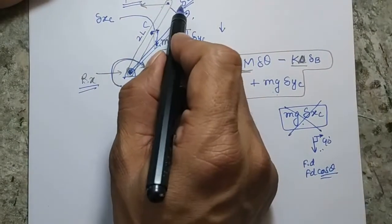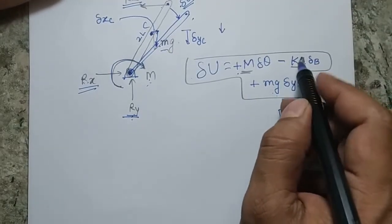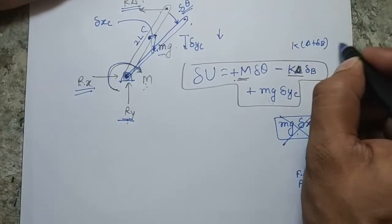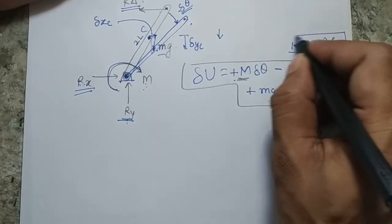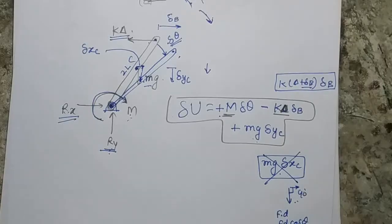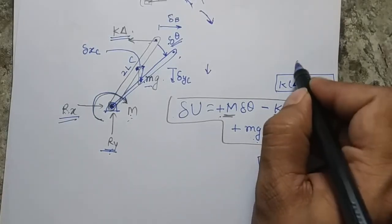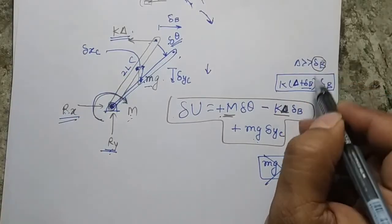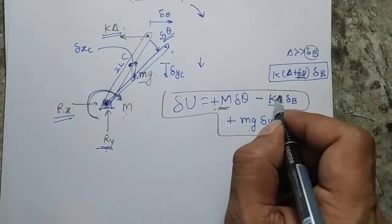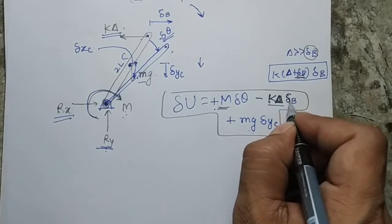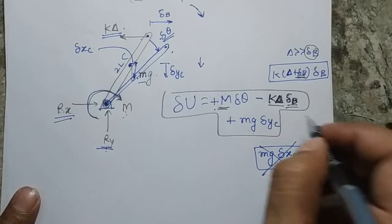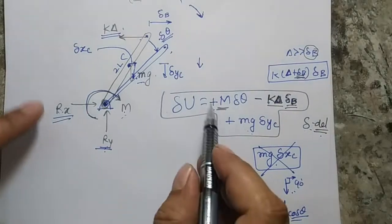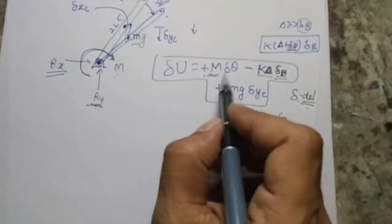You might think that the spring extension δ will also change by δ_Bx when the virtual displacement is given, making the spring force K(δ + δ_Bx). However, since the virtual displacement is very small, δ is much greater than δ_Bx, so we assume the spring force remains K·δ and δ_Bx is only the virtual displacement.